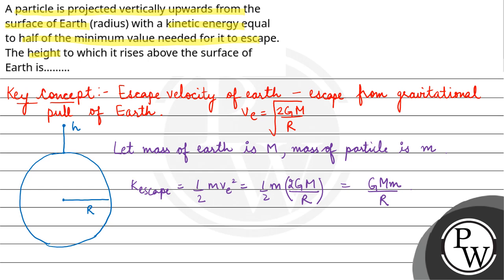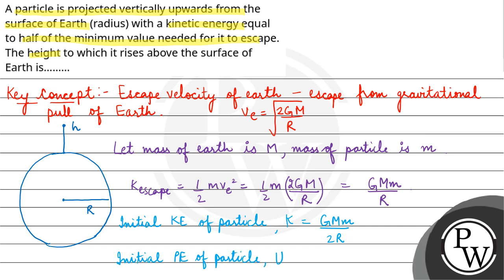So the kinetic energy of the particle is half of that. Initial kinetic energy of the particle, let's say K, is half of it, so K equals GM upon 2R. And the initial potential energy, let's say U, will be minus GM upon R, because it is on the surface.